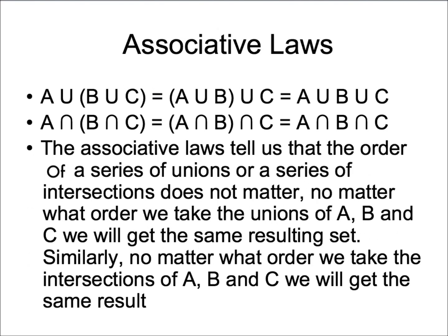The same can be said about the intersection of set A and B. Now we have the associative laws. They tell us that the order of a series of unions or a series of intersections does not matter. No matter what order we take the unions of A, B, and C, we will get the same resulting set.